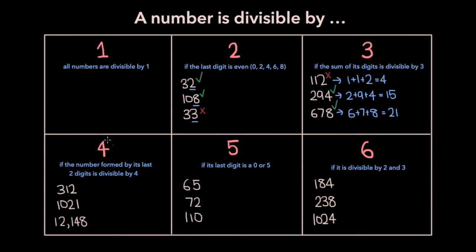A number is divisible by 4 if the number formed by its last two digits is divisible by 4. So for the number 312, the number formed by its last two digits is 12. The number 12 is divisible by 4 — 12 divided by 4 equals 3 — and so 312 is divisible by 4. For the number 1021, the last two digits form the number 21. 21 is not divisible by 4, and so 1021 isn't divisible by 4 either. For the number 12,148, the last two digits form the number 48, which is divisible by 4 — 48 divided by 4 equals 12 — and so 12,148 is divisible by 4.